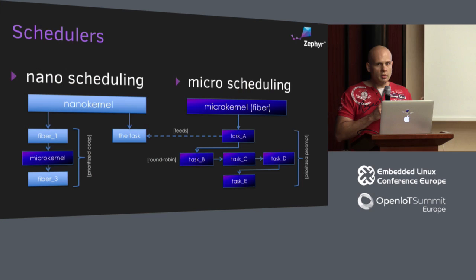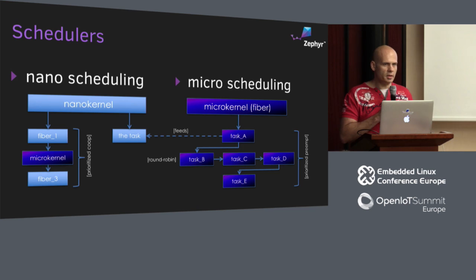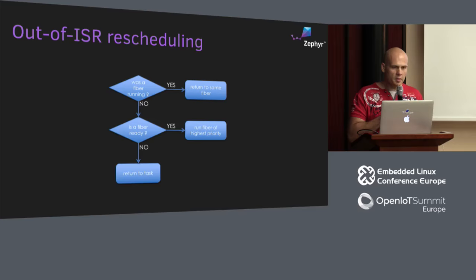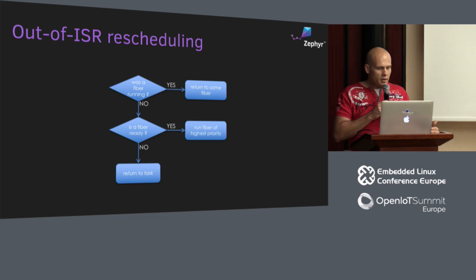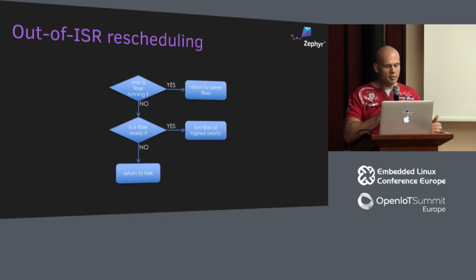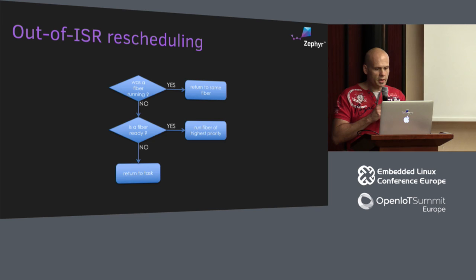The microkernel schedules tasks based on their priority and tells the nanokernel which task it has to know about at each moment. For the out-of-ISR rescheduling: since a fiber cannot be preempted by another thread, when an ISR exits it checks if a fiber was running — if so, it goes back to running that fiber without any other rescheduling decisions. If a fiber was not ready and the task is preemptible and a fiber becomes ready, it context-switches to that fiber. Otherwise it goes back to running the task.